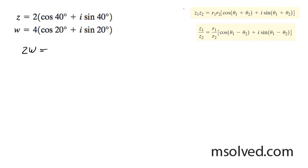We're going to use this right here. So we're going to get 2 times 4, and then the cosine of 40 plus 20, and then plus i sine of 40 plus 20.